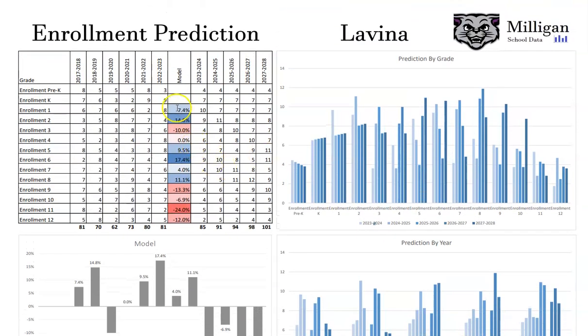Once we have that predictive model, we can then apply that to that basic model of just looking at enrollment one year and assuming that it will be the same the following year, but applying that predictive model to it. You can see here that the school in 22-23 had nine students in kindergarten. If we assume that on average that enrollment will grow by 7.4%, we can assume that they will have 10 students in 23-24 in the next grade.